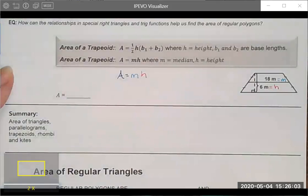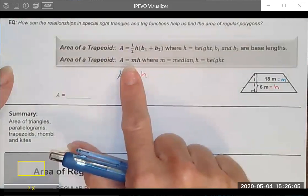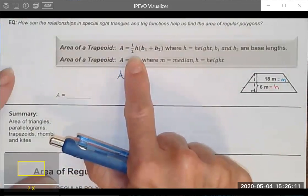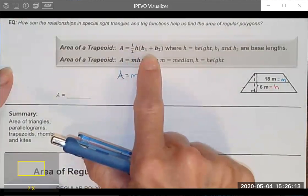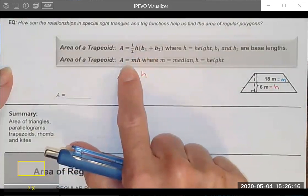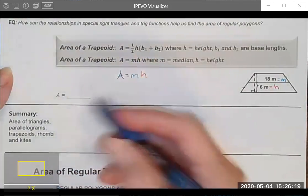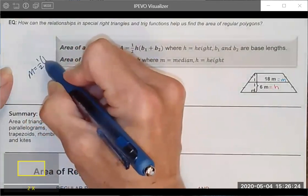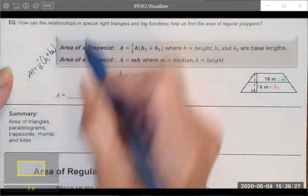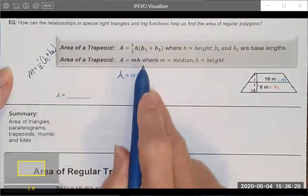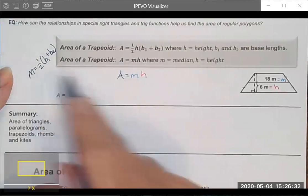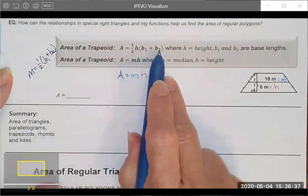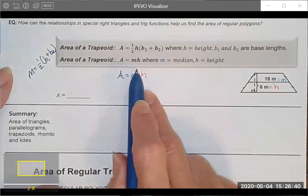All right, last one. Area of a trapezoid. Turns out trapezoids are so interesting they have two area formulas. The first is one half the height times the sum of the bases. The second is the median times the height. And if you'll remember, the median can be found by just taking one half of base 1 plus base 2. So really these two formulas are exactly the same. It's just that sometimes I know the median and I don't know the individual bases. Sometimes I know the bases, in which case I could solve for the median or I could go directly to the area.